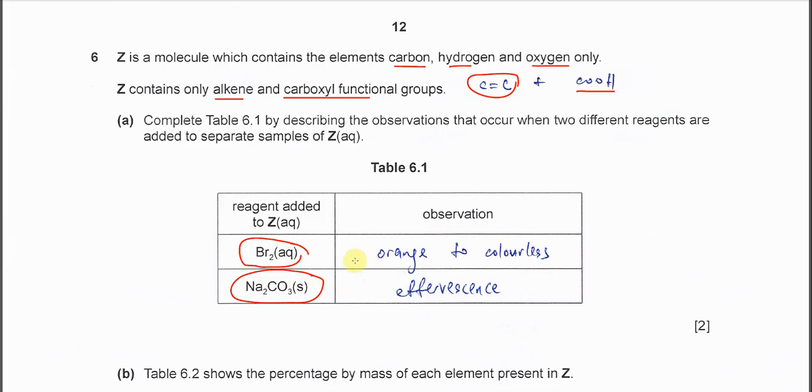Because this molecule has a C=C double bond, when we add bromine water, the orange will decolorize because bromine adds to the C=C double bond.